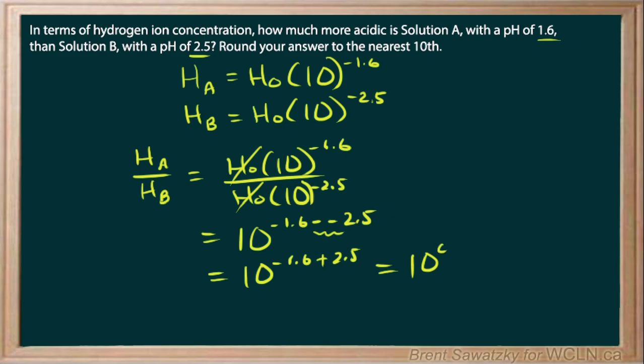So plugging that into our calculator, 10 to the power of 0.9, we find that we get 7.9. So it's 7.9 times. The concentration of solution A is 7.9 times the concentration of solution B. We're done.